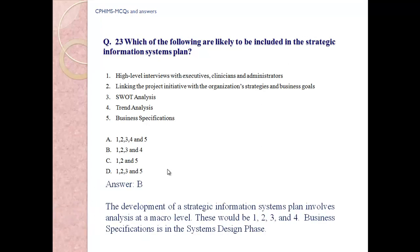Answer B: 1, 2, 3, and 4. The development of a strategic information system plan involves analysis at the micro level. This includes high-level interviews with executives, clinicians, and administrators; linking project initiatives with organizational strategies and business goals; SWOT analysis; and trend analysis. Business specifications belong in the system design phase, not the strategic plan.